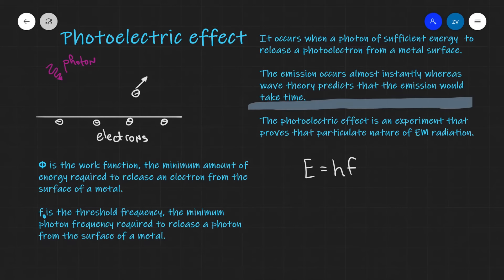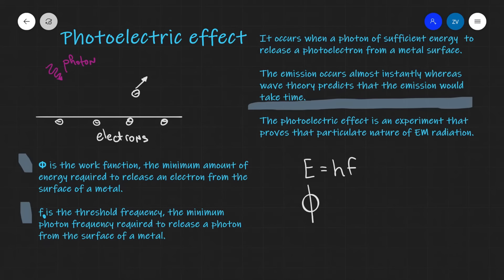In order to study the photoelectric effect, we need to define a few quantities. The first is the work function — that is the minimum amount of energy required to release an electron from the surface of a metal. We can also define the threshold frequency, which is the minimum photon frequency required to release a photoelectron from the surface of a metal. Remember, energy is proportional to frequency, so the work function phi equals h times the threshold frequency f₀.